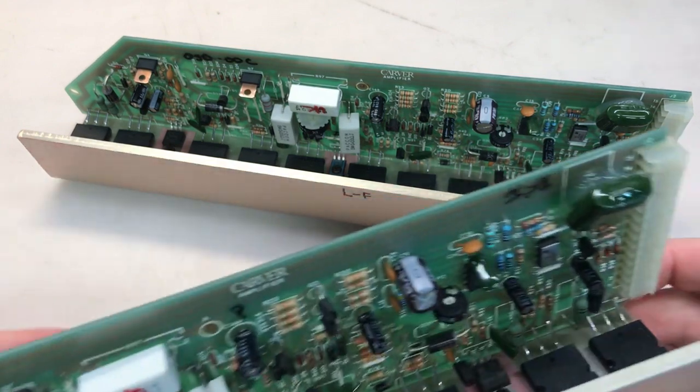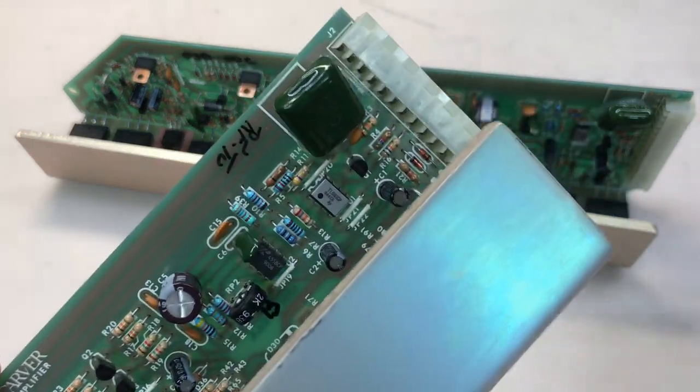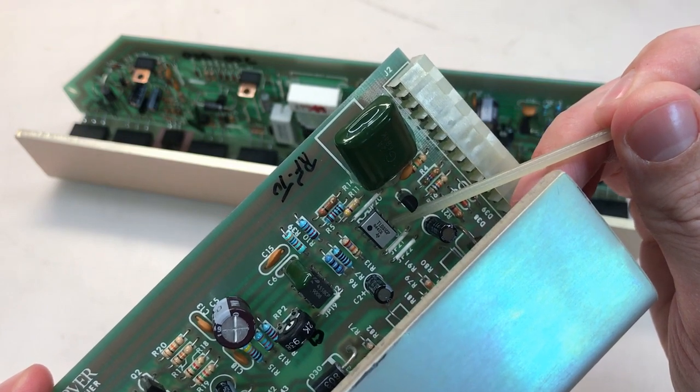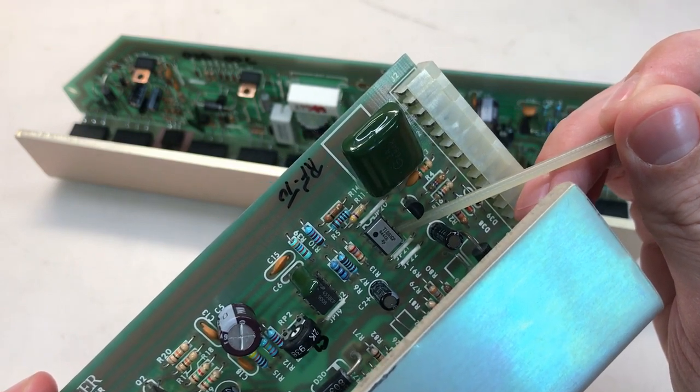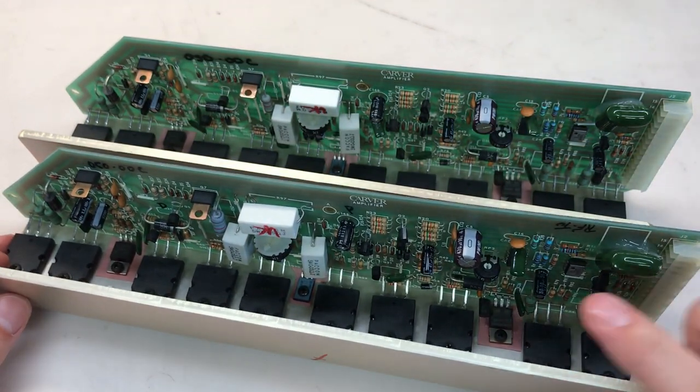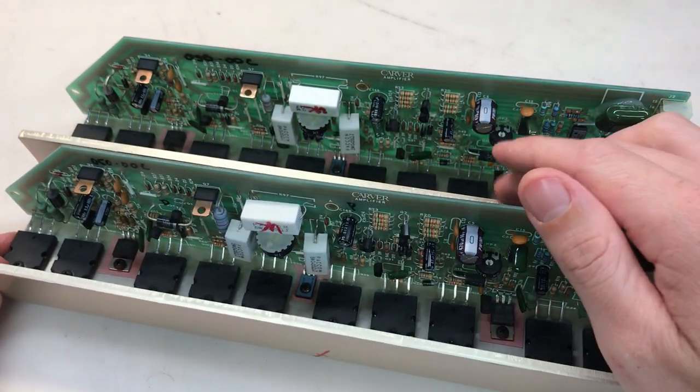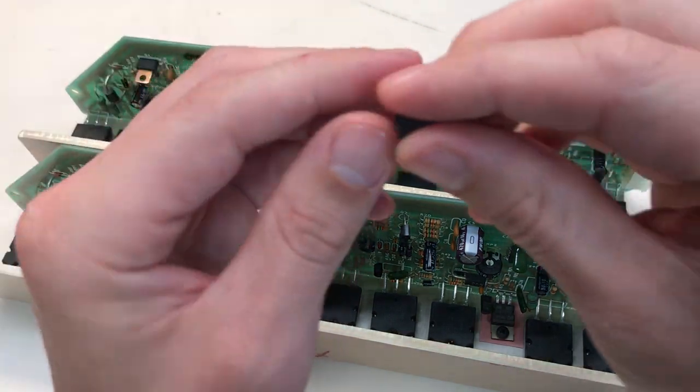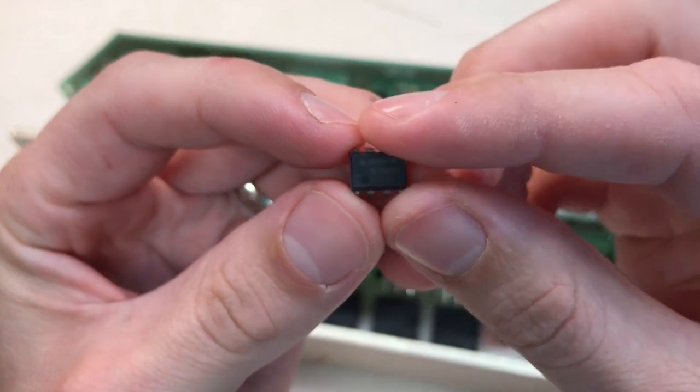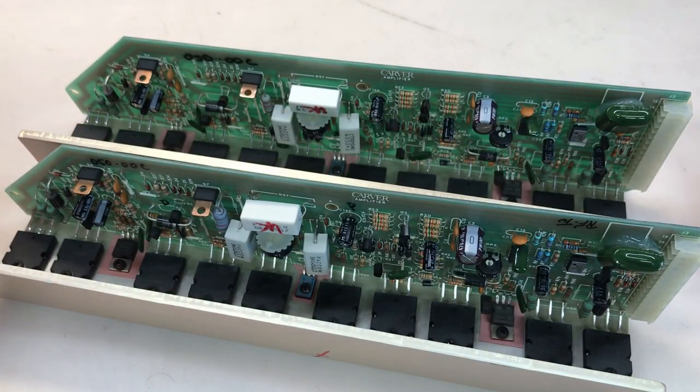The first thing I'm going to do is replace the op-amp U1, that's this silver coated chip right here. It's a Texas Instruments TL081CP op-amp, and although I believe the only bad op-amp is on the right channel, I'm going to replace the one on the left channel as well. The direct replacements are still available from Digi-Key and likely other suppliers, and they're very cheap. So I ordered many, so it's not a big deal to just replace both of them.